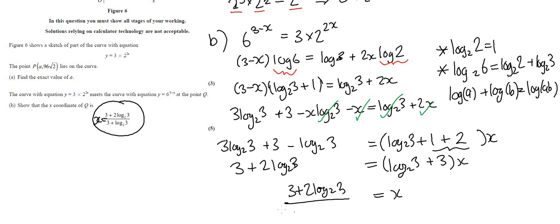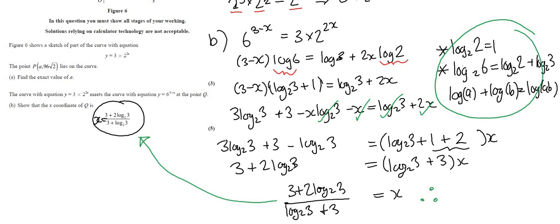So x equals three plus two log base two of three, divided by log base two of three plus three. The key rules that helped here: log base two of two equals one because two is two to the power of one, and log a plus log b equals log(ab), which let us rewrite log base two of six as one plus log base two of three.